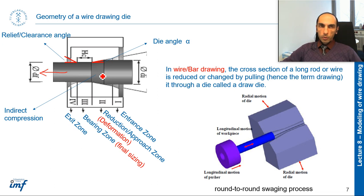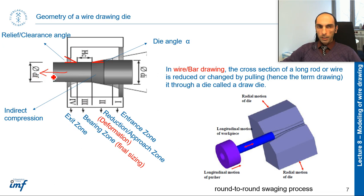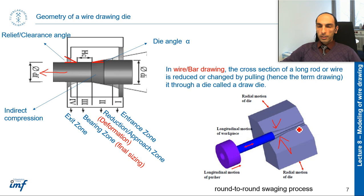Usually a swaging process is performed before wire drawing. When you want to start, the material must be able to pass through the die first so you can grab and pull it. The swaging machine reduces the size at the beginning of the workpiece — it's a kind of forging that makes the head of the material thinner so it can pass through the die, after which you can pull it through.